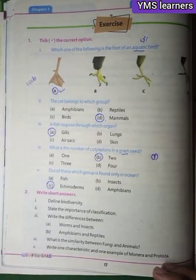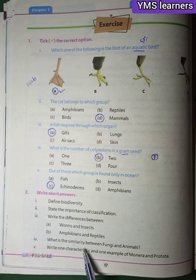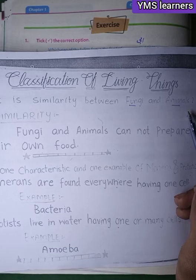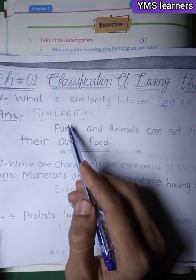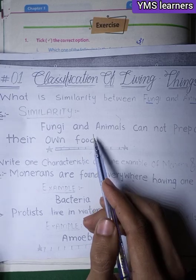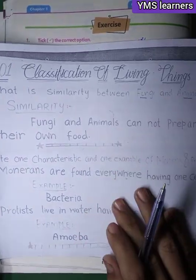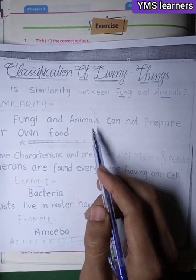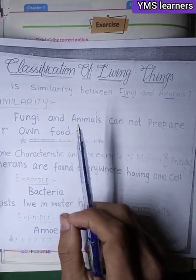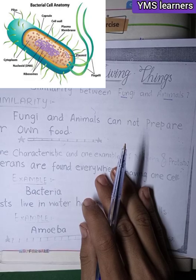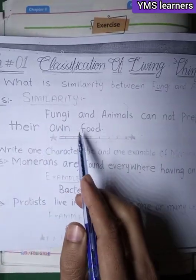What is the similarity between fungi and animals? The similarity is that both fungi and animals cannot prepare their own food — they are both heterotrophs. That is one similarity between fungi and animals.